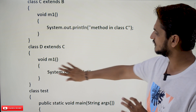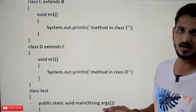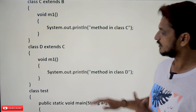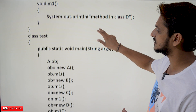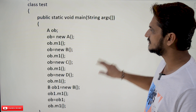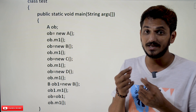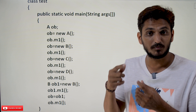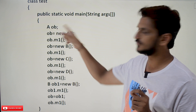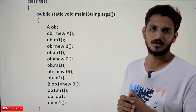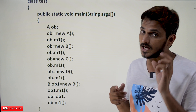All the subclasses have an M1 method — we call this method overriding. The signature is the same, the method name is the same, everything is the same, but the logic inside each method is different. Now let's understand the concept: a superclass variable can reference a subclass object.